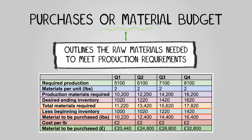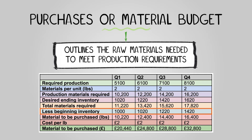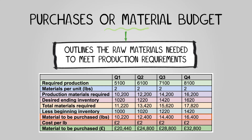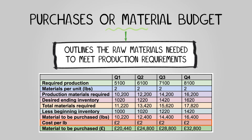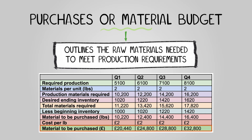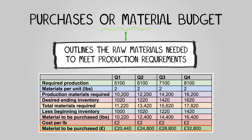Less beginning inventory — the quantity of raw materials in stock at the beginning of the period — gives the quantity of material to be purchased. Cost per quantity is the cost of purchasing each individual unit of raw material. The cost of material to be purchased is calculated by multiplying the quantity of material to be purchased by the cost per quantity.